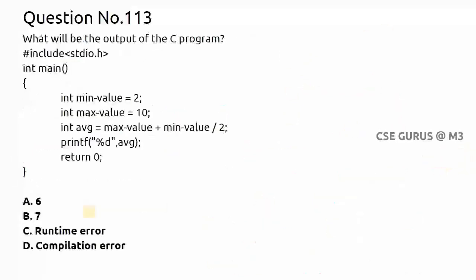Coming to question 113: what is the output of this C program? Here min value and max value are declared as variables in an average equation. But notice carefully — it is not an underscore; it is a hyphen. A hyphen is not accepted when declaring a variable name in C. Since both variable names use hyphens, this gives a compile-time error. If it were an underscore it would be allowed, but hyphens are invalid. The answer is D.